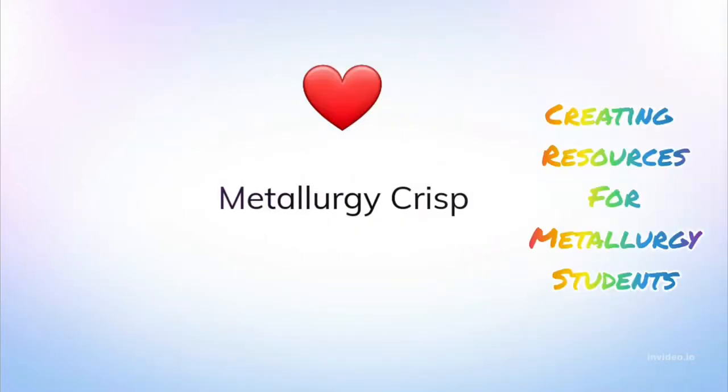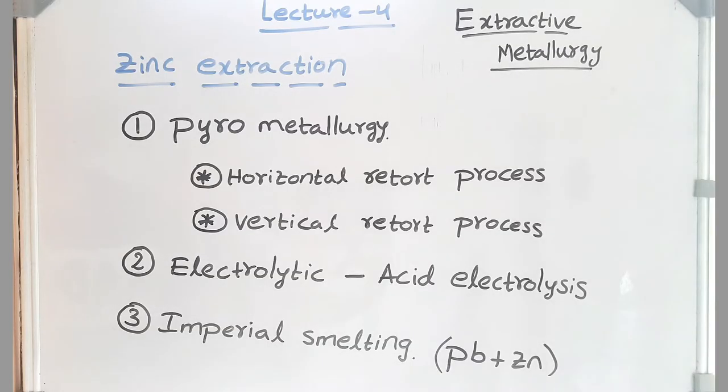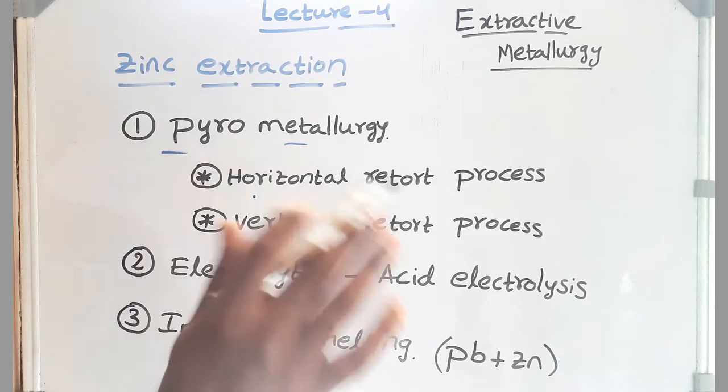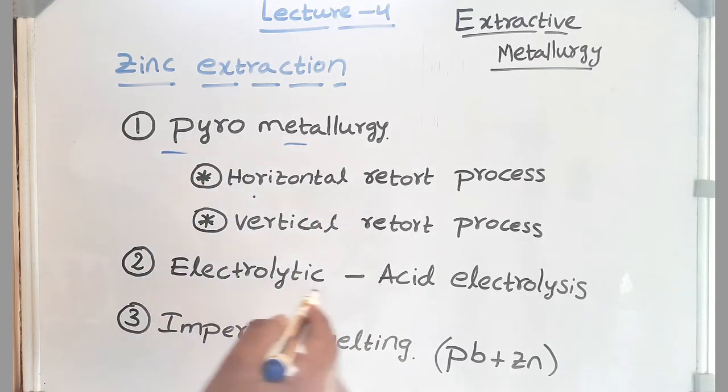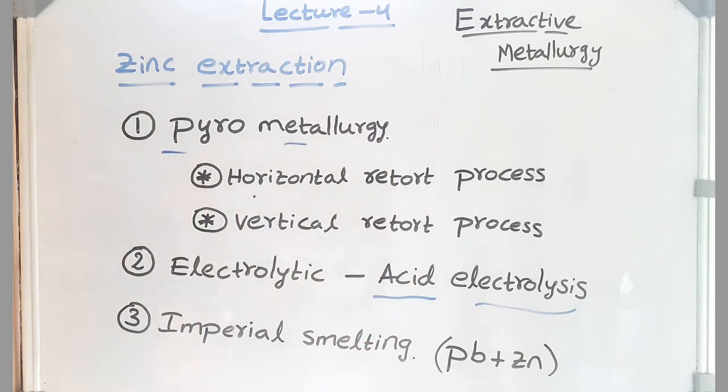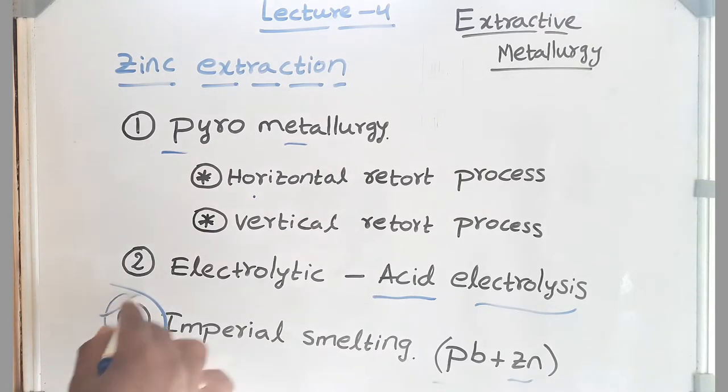Hello friends, hope you are doing well. Zinc extraction can be done by many processes. Out of them we're going to discuss the most economical ones. We're going to start with the pyrometallurgy. Here we have two different processes: horizontal and vertical process, followed by the electrolytic - this is acid electrolysis. This is the most versatile process as of now. Then we are going to discuss the most beautiful process out of all these - imperial smelting. Here at the same time we can get lead and zinc without spending any more money, so this is the most economical process.